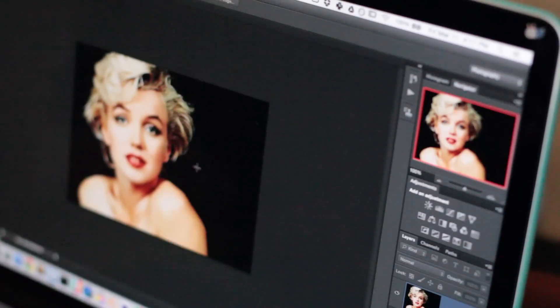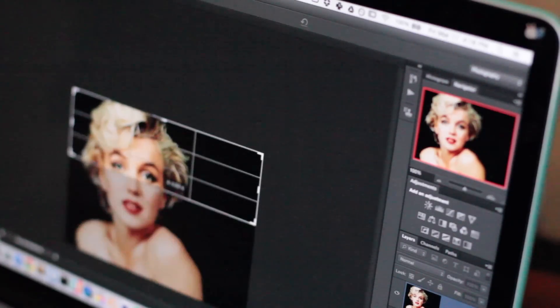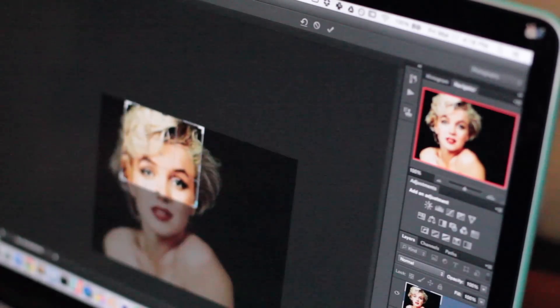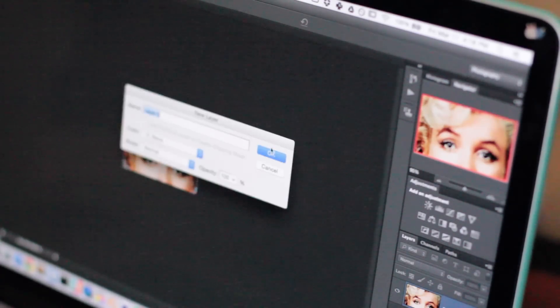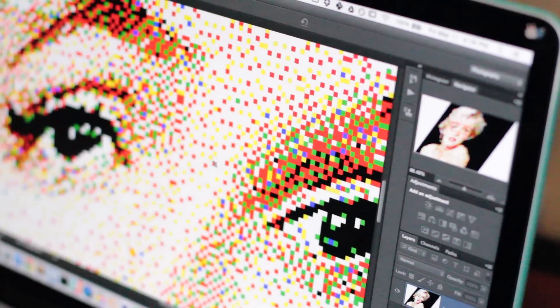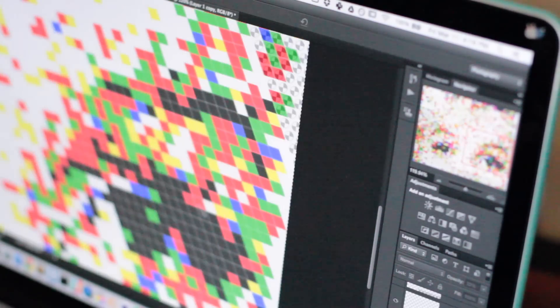First, find an image you want to base your piece on. Try looking for a simple image. If it's too complicated, it might not be recognizable when it's pixelated later. I took a portrait of Marilyn Monroe and cropped it to just her eyes.